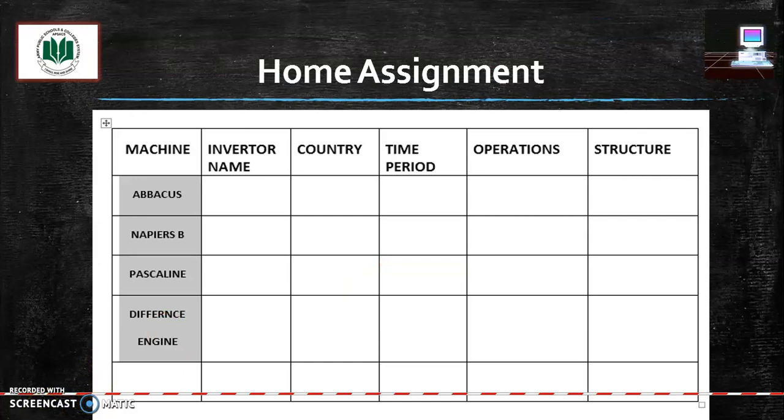This is your home assignment. Try to solve it as soon as possible and send it to me on LMS or your comment section where you are viewing this video. You have to write the name of inventor, like Abacus invented by Chinese, its time of invention is 3000 BCE, its operation structures. Solve this similar for Napier's Bones and Pascaline. At this time, skip difference engine. We will discuss it in the next video.